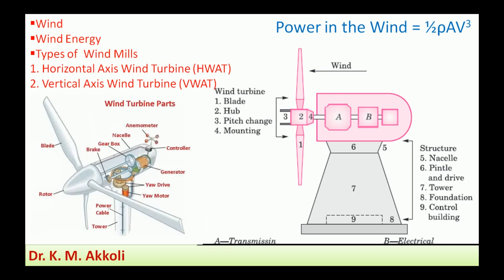We can harness that kinetic energy and convert it into mechanical energy — that is the conversion of wind energy into mechanical energy. If we connect that mechanical rotary energy from the windmill to a generator, we can generate electricity. The devices or equipment used to convert wind energy into electrical energy are called wind turbines or windmills.